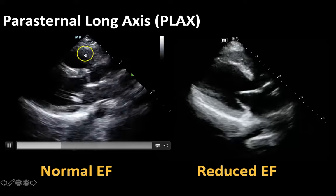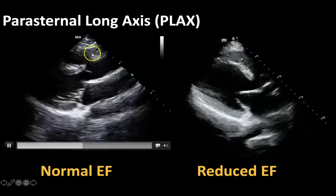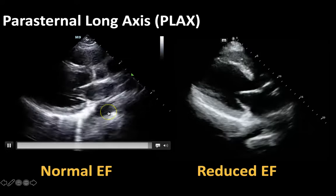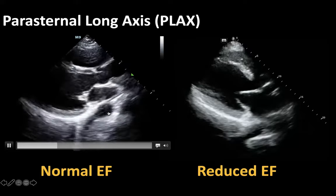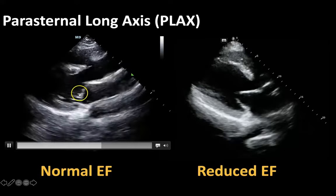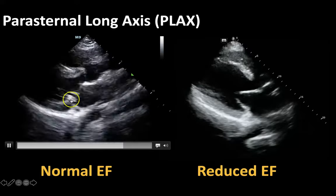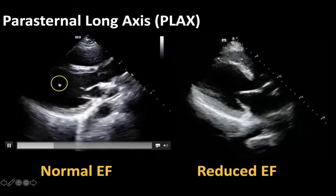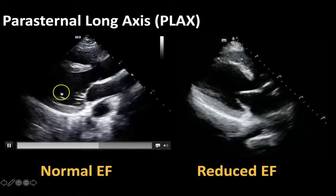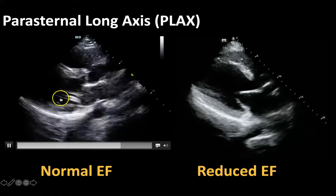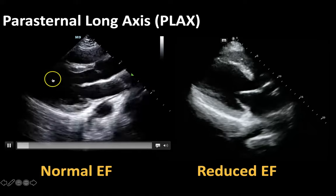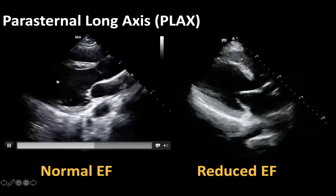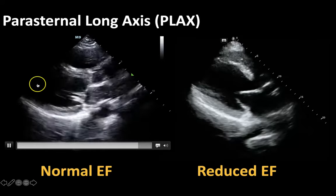This most superficial structure is going to be your right ventricle, and back here is your descending aorta. When you're assessing for ejection fraction, I really want your eyes to focus on the left ventricle. What I like to do is draw an imaginary line in the middle of the ventricle and picture how close the walls are coming towards the middle to see how well the chamber is emptying during systole.